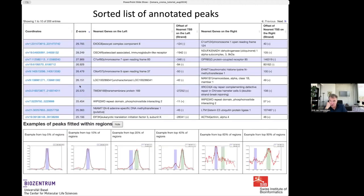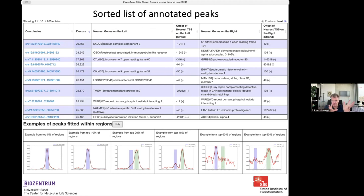The output of this CRUNCH analysis is a list of peaks with a Z-score, nearest gene on each side, and other annotations. All you need to know for understanding CREMA is that these pipeline steps are run on the raw input data so that, at the end, for each sample, we get a list of all CREs — all peaks — that occur in that sample.